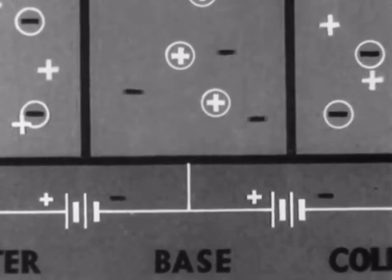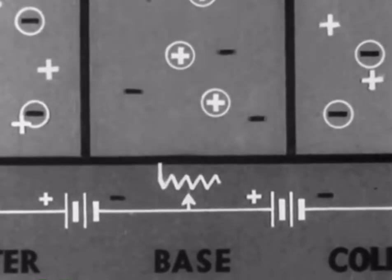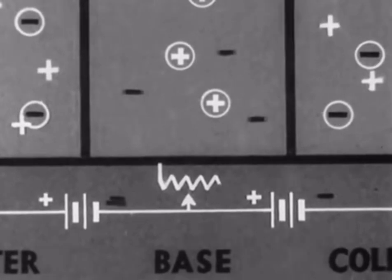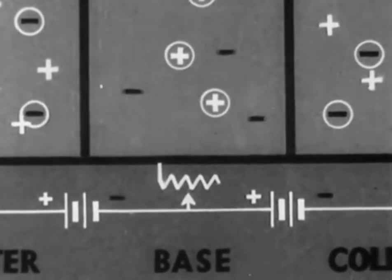By varying the flow of electrons into the base, we can, in fact, control the number of holes which reach the collector. It is this control of positive holes which makes it possible for a transistor to amplify.